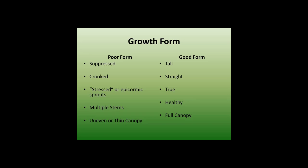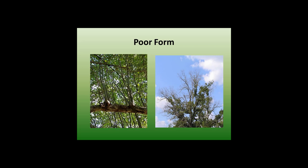You'll also want to look at growth form. A poor form tree is suppressed, might be crooked, show stress with epicormic branching or sprouting, have multiple stems — which signifies a slightly weaker tree — or have an uneven or thin canopy. If you notice dieback when trees are fully leafed out, that's not a tree you want as a crop tree. A good form tree is tall, straight, not leaning significantly, healthy, with a full canopy and pronounced green leaf color.